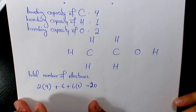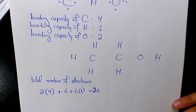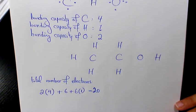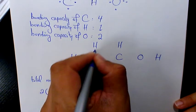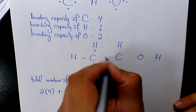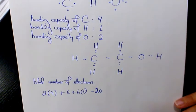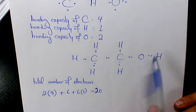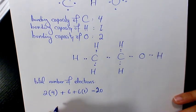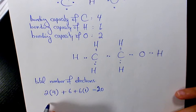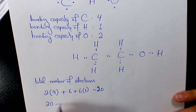What we need to do next is place one pair of electrons between each adjacent pair of atoms. Every two dots represents a bonding electron pair that forms a single covalent bond. Counting the bonds: 1, 2, 3, 4, 5, 6, 7, 8 bonds. So we have 8 bonds, using 16 electrons. That leaves 20 minus 16, which is 4 electrons remaining.